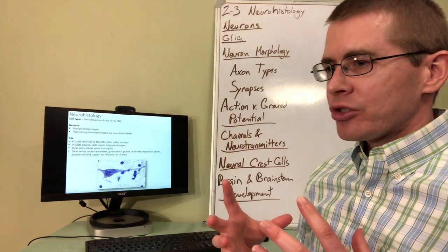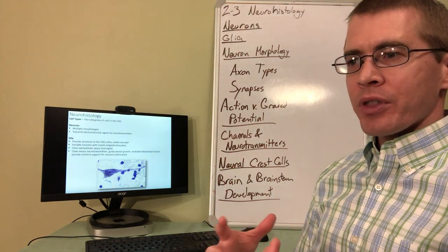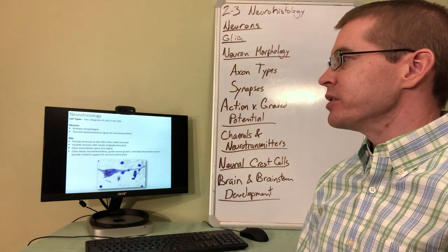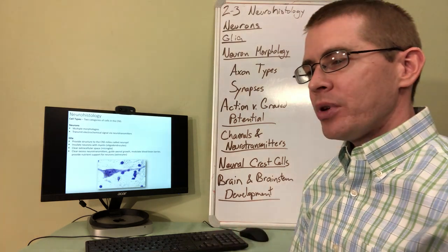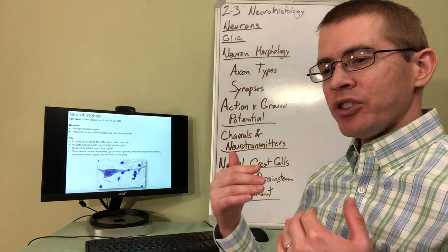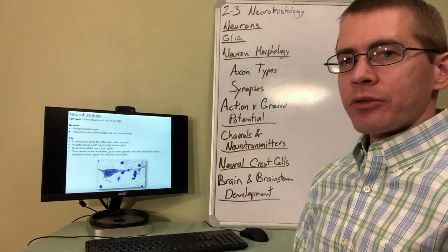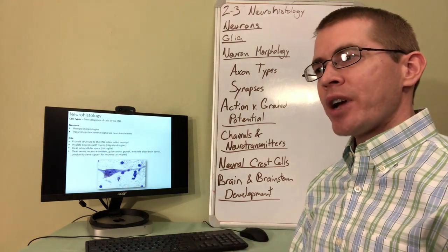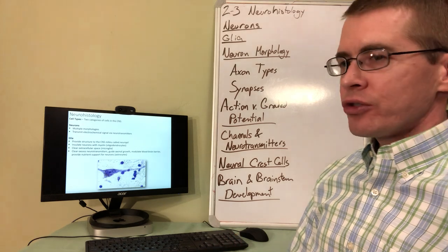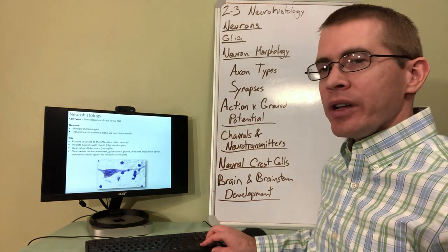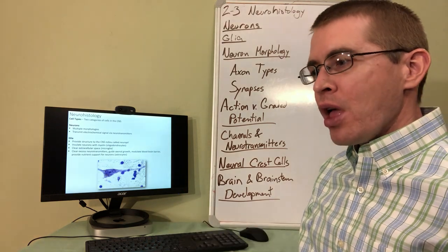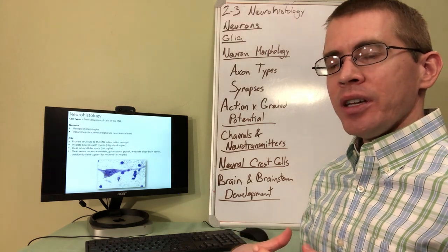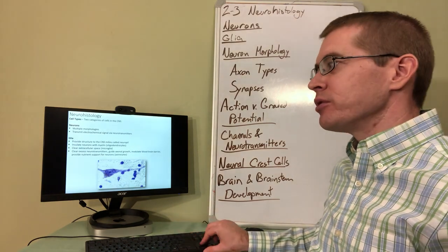Glia provide structure to the central nervous system. They form things like the blood-brain barrier that protects the brain from infection and toxins. They also help insulate neurons so that action potentials can travel quickly, and they nurture neurons by recycling neurotransmitters and providing nutrient support. Research continues to reveal how critical glia are in dysfunctions of the central nervous system.